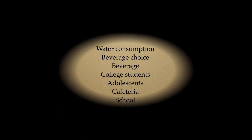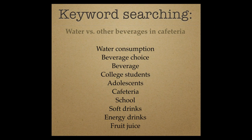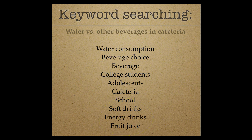Let's say you were searching the very specific behavior of whether students in the cafeteria went to the beverage station and got water or some other beverage. You may be able to search for water versus other beverage, college students, cafeteria — but you might not find anything. There may be no peer-reviewed study on that. So you might have to broaden your keywords, and in fact go through the back door and search for information about soft drink consumption, energy drinks, or fruit juice, and find out how much of those things students are drinking.